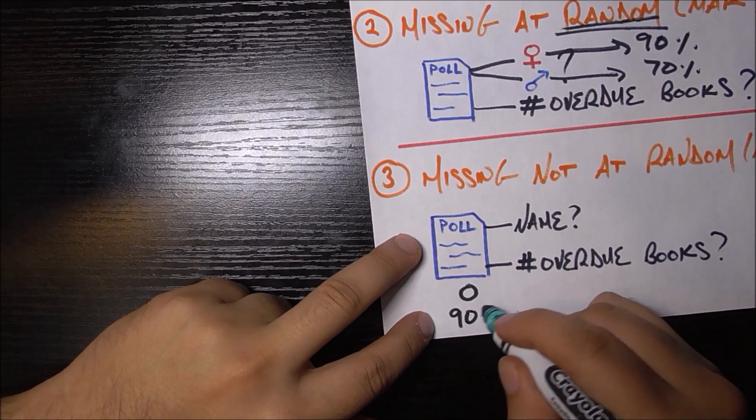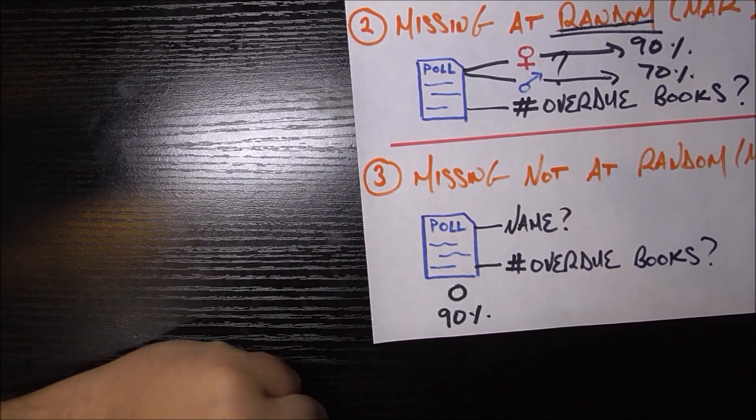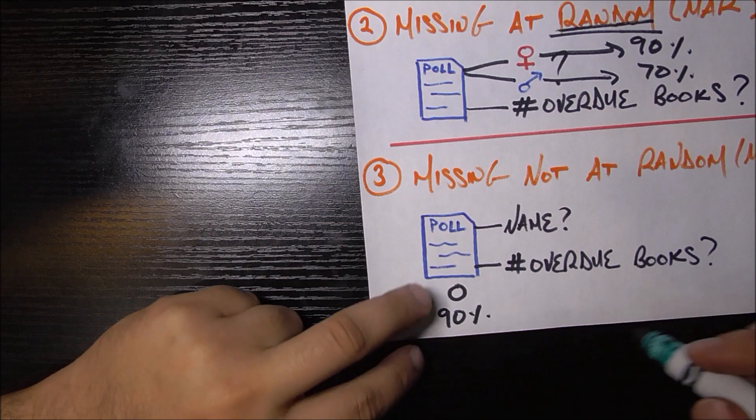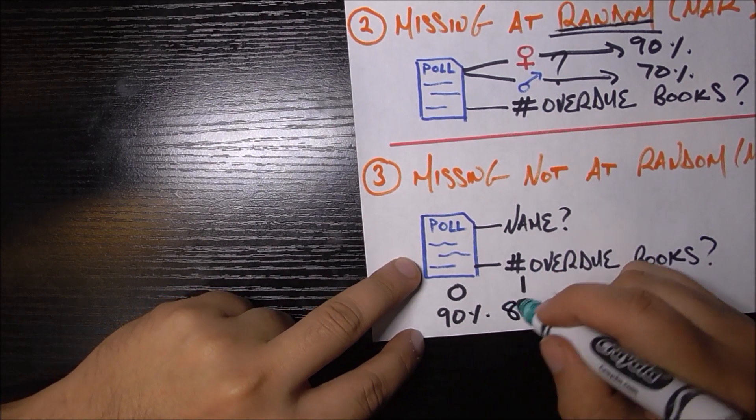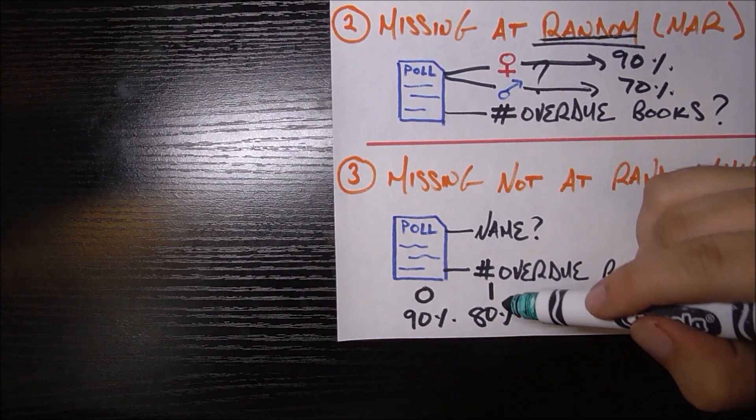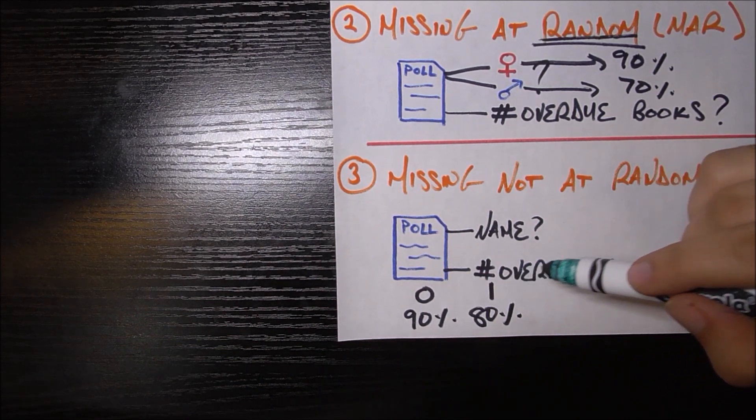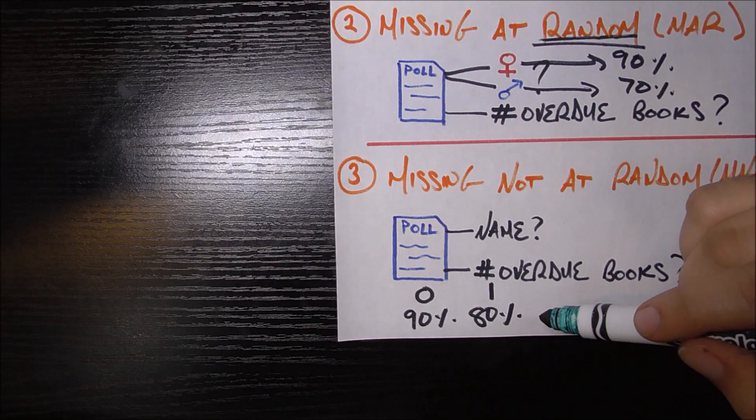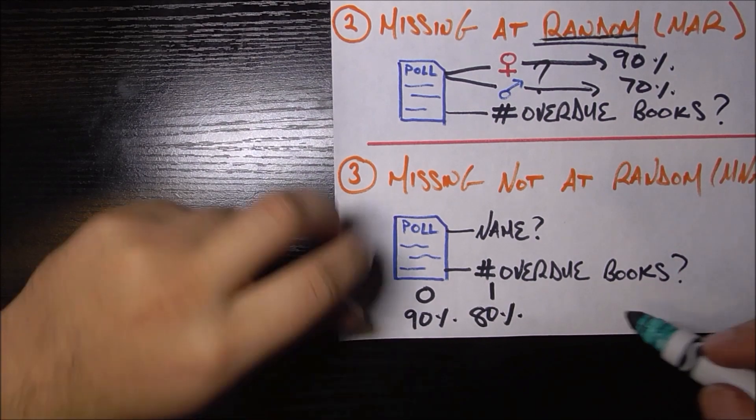Let's say that if you truly have zero overdue books, then you are 90% likely to answer this poll and give how many overdue books you have. Let's say if you have one overdue book, that drops to 80%. This makes sense because if you have more overdue books, if you truly have more overdue books, you're less likely to tell me about it because it's kind of an embarrassing fact about your life.